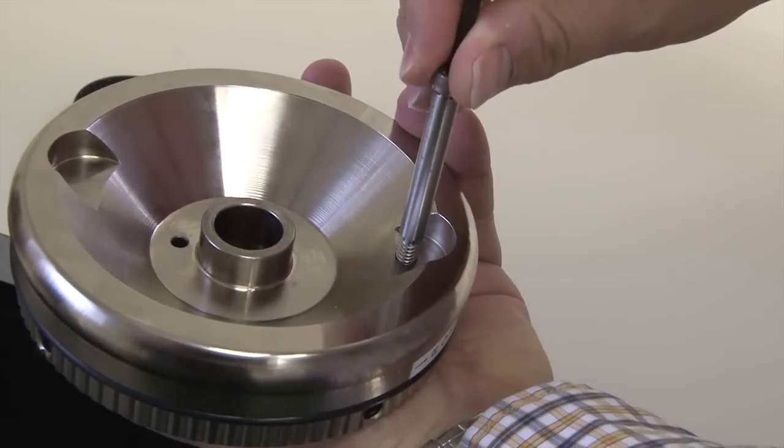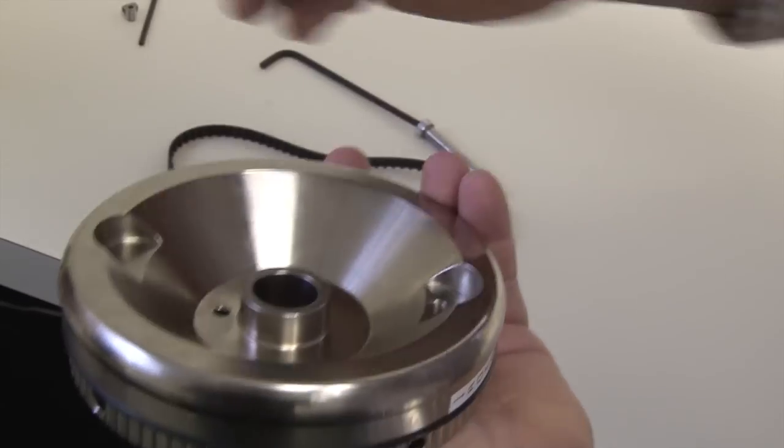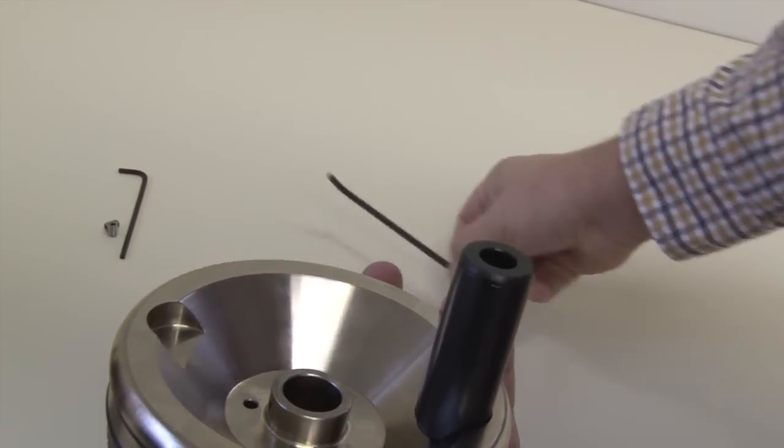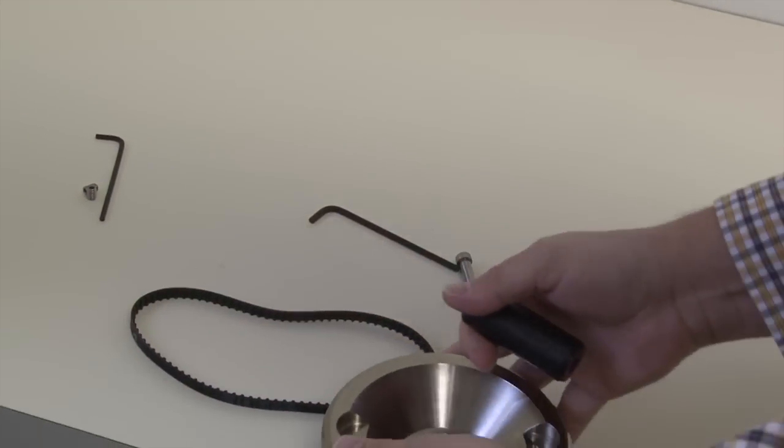And the hand crank handle attaches right here in this hole. So, handle fits in, shoulder bolt goes through, and you lock it in place. Let's go ahead and do that right now.